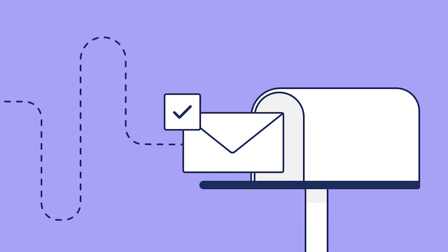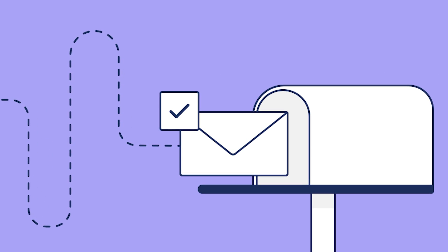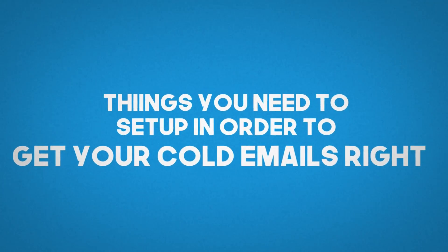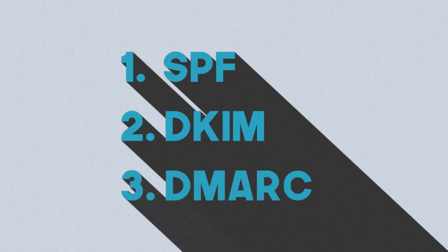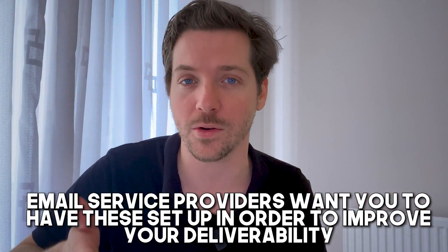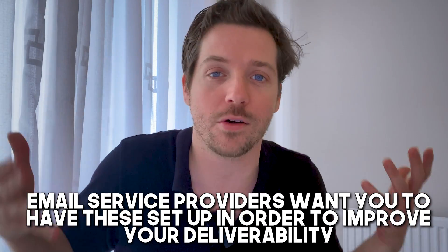There are a lot of acronyms when it comes to improving your email deliverability. To get you started right away, I'll avoid defining them, but I will say them right now. There are three things you need to set up in order to get your cold emails right: SPF, DKIM, and DMARC. You don't need to know what they stand for — I will show you exactly how to set them up. Just know that the email service providers want you to have these set up in order to improve your deliverability.